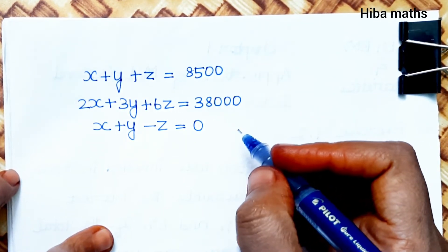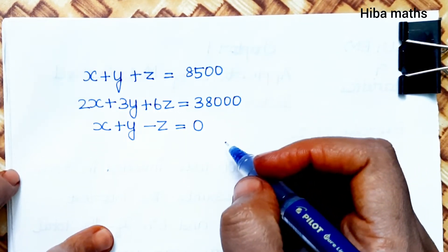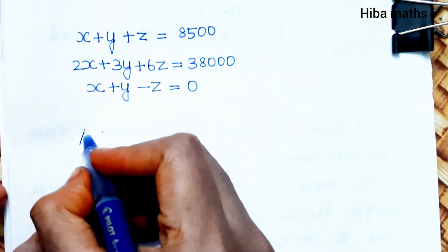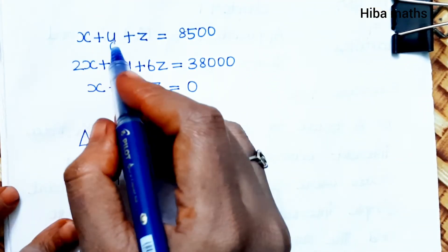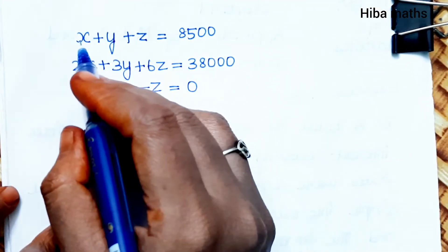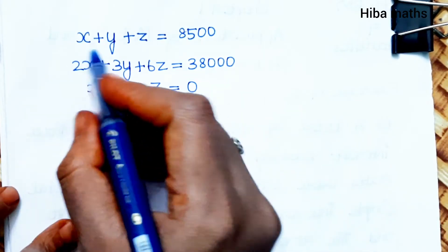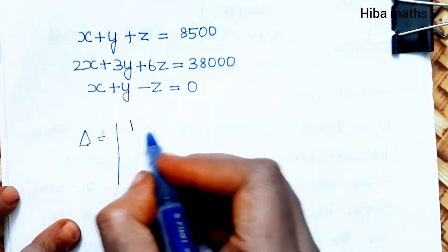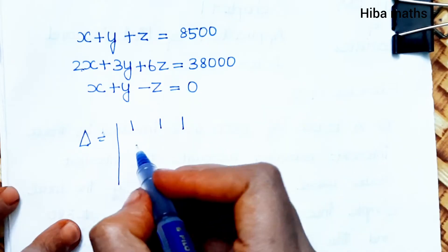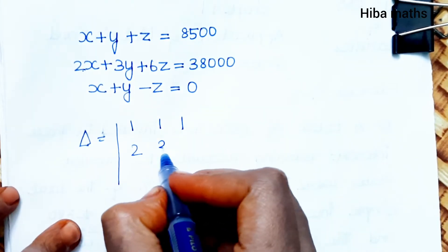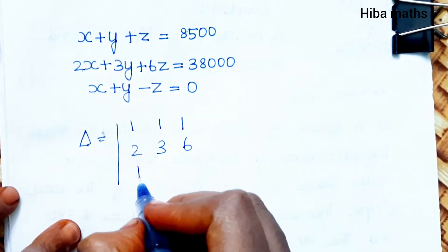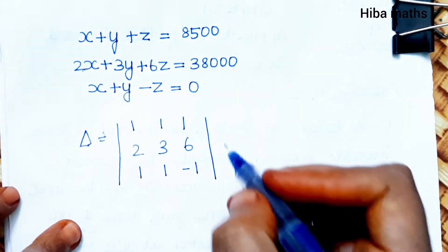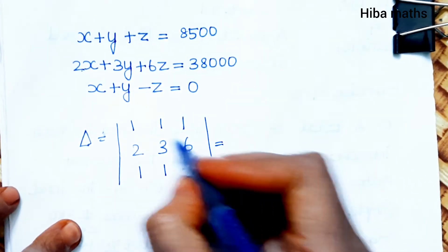Now we form the coefficient matrix and find the determinant Δ. The matrix is formed with the coefficients: first row 1, 1, 1; second row 2, 3, 6; third row 1, 1, minus 1.